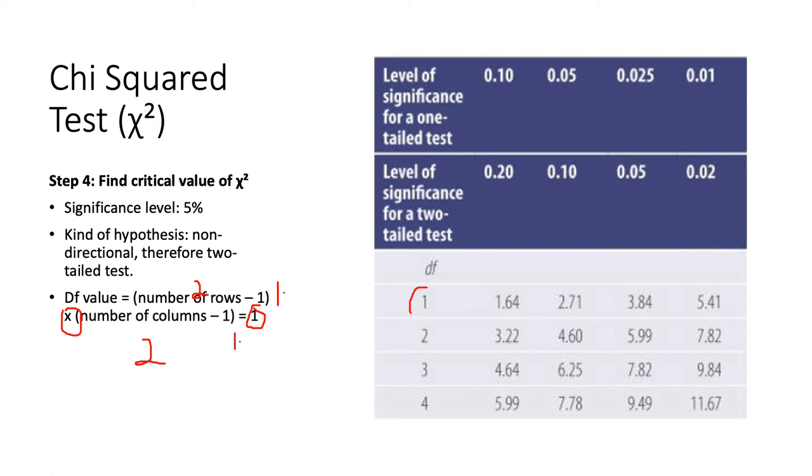The kind of hypothesis was two-tailed because it was non-directional. We only said that there would be an association or a difference. We didn't say which way it would go. And the significance level is 0.05. So, therefore, we're looking at this critical value here.